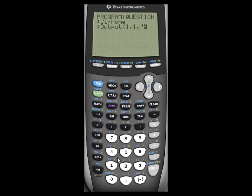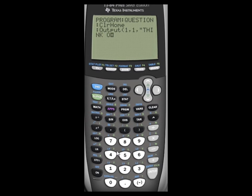So what I want to say for the first line is, THINK OF A. Now make another output, and now say 2, comma, 1, comma.